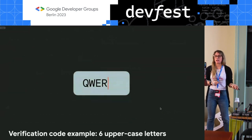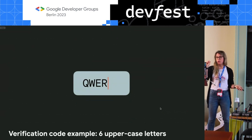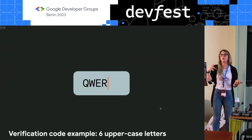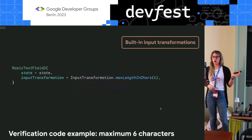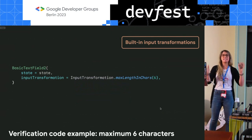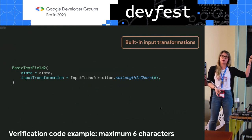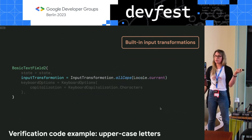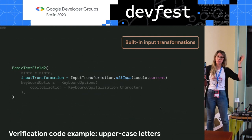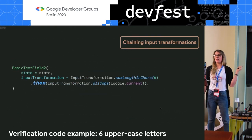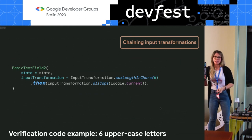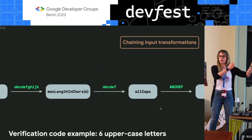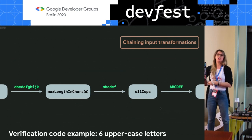Two more input transformation examples: to limit string length to six characters, there's a built-in input transformation you can call directly — super simple. To transform text to all caps, there's also a built-in transformation. To apply both, you use a chain method — much like the modifier chain — and they're applied sequentially: first cutting input at six characters, then changing everything to all caps.